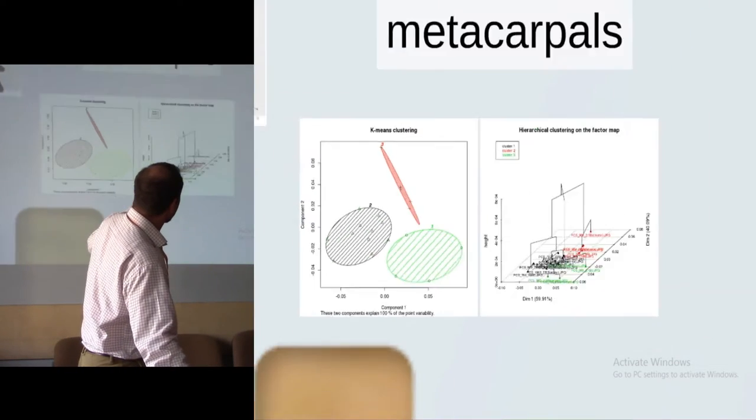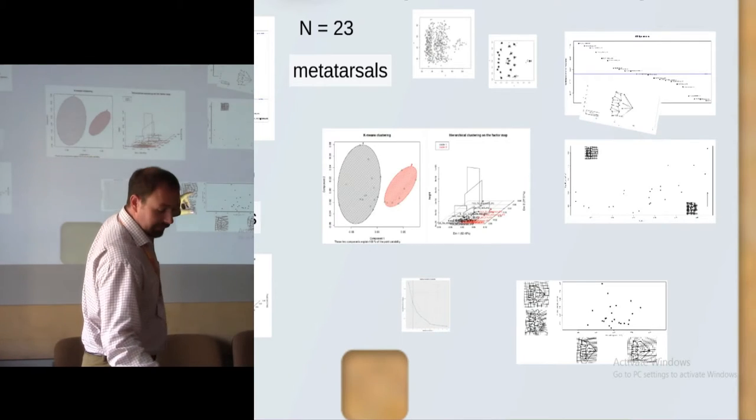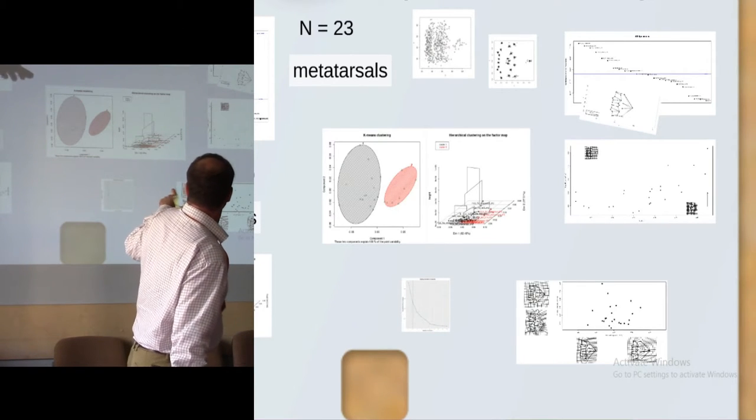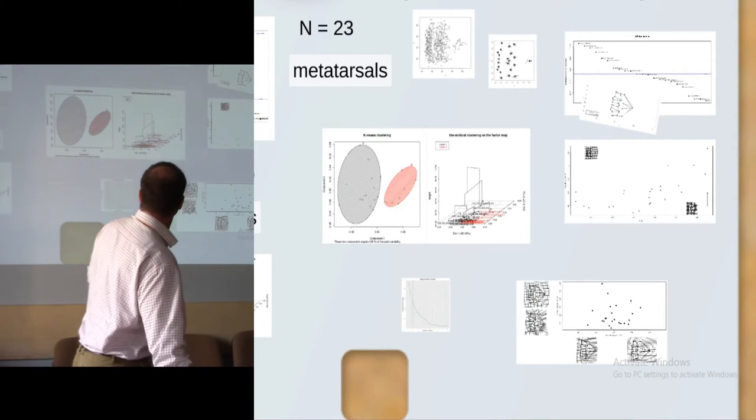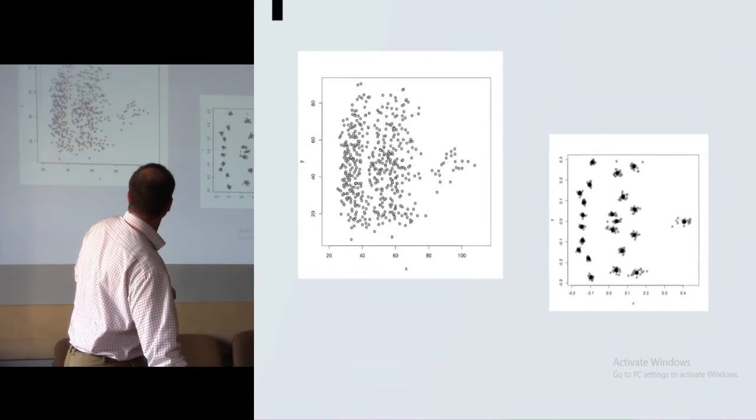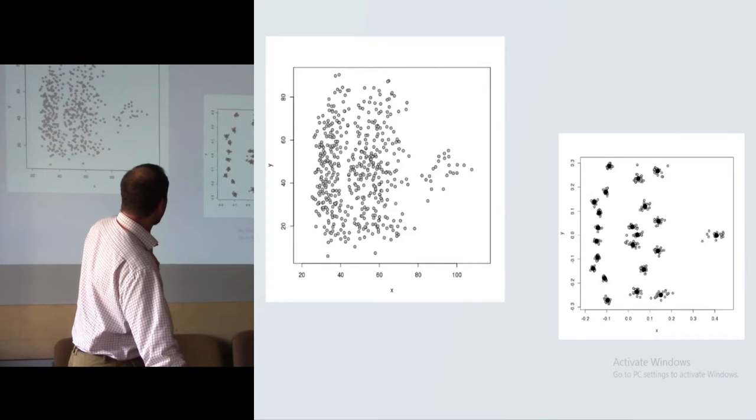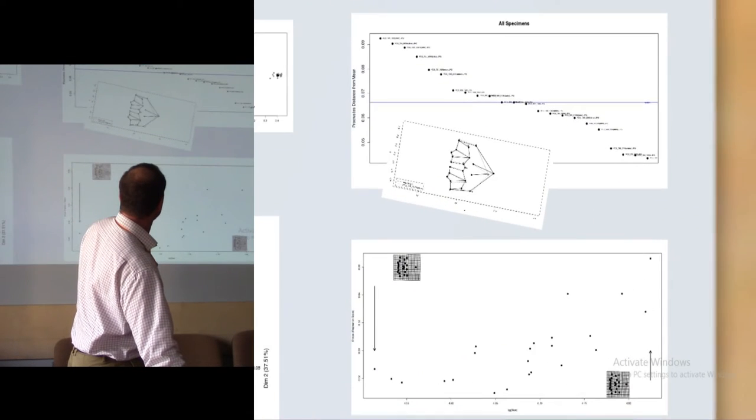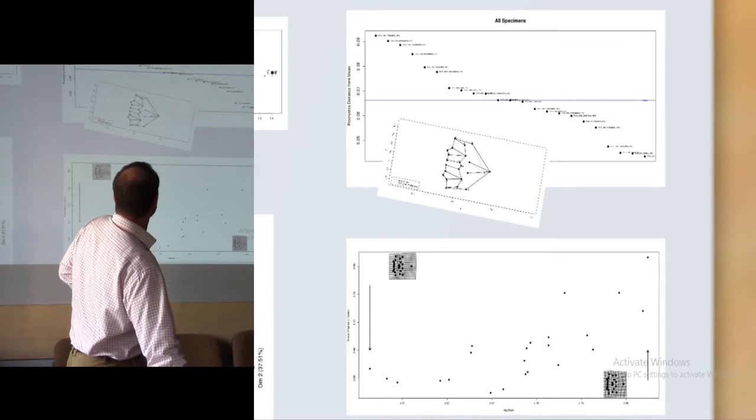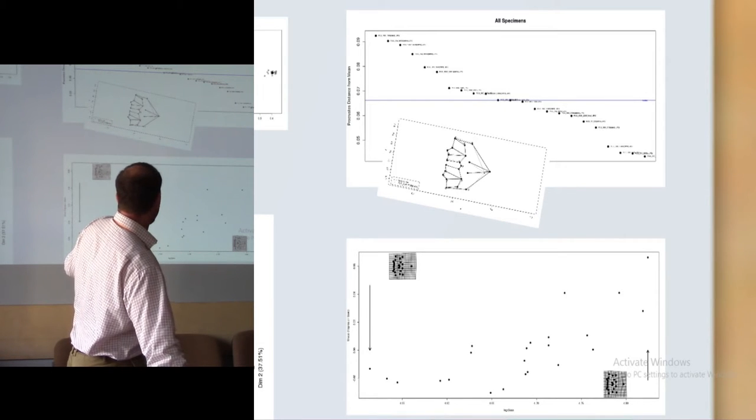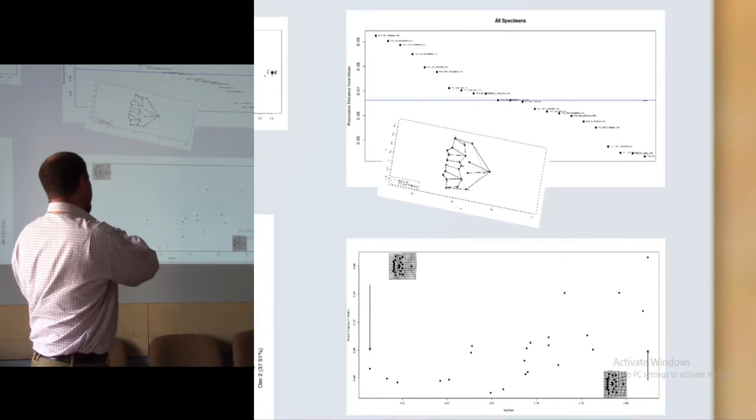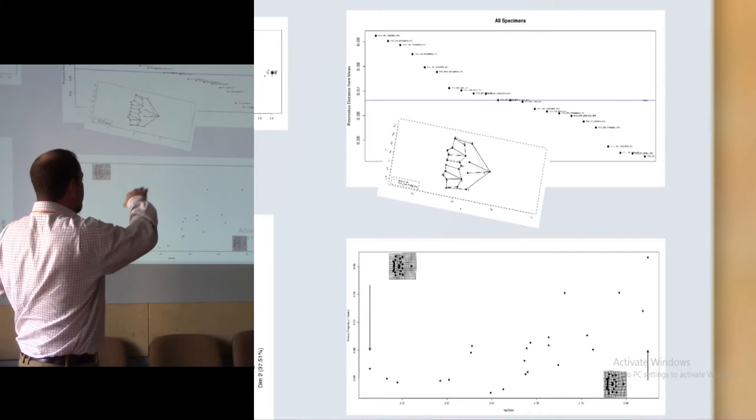Now I will speak about this later more, but now first see the metatarsals shortly. This is the scatterplot and GPA results. We haven't got any outliers also. The result of the allometric analysis is almost the same. It's very strong correlation between size and shape variations.